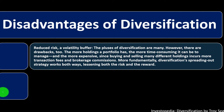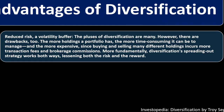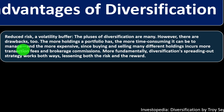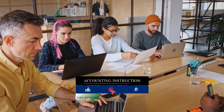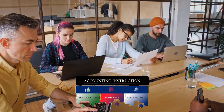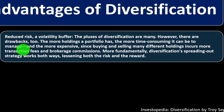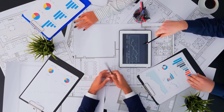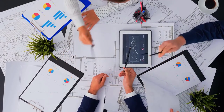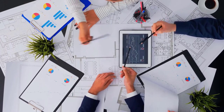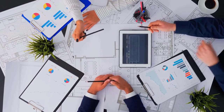Disadvantages of diversification: everything has its pros and cons. While the pluses of diversification — reduced risk, volatility buffer — are many, there are drawbacks too. The more holdings a portfolio has, the more time-consuming it can be to manage. Diversifying on your own using individual stocks takes a lot of time. Using mutual funds might be a little easier, or you might have a targeted mutual fund that basically does the diversification for you — the most simplified approach, depending on your level of sophistication.